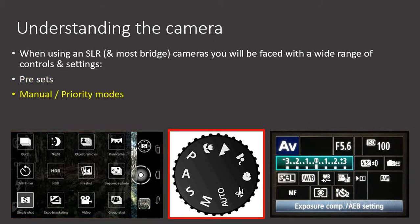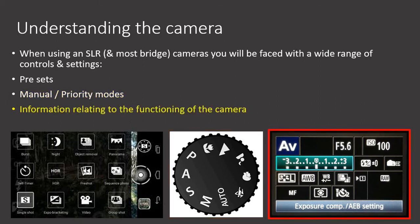For more advanced cameras there will be a button on top which will give you access to aperture, shutter, manual, priority and various other settings. And there's many pieces of information available based upon whatever setting you have to be using at the time, so there's a lot to look at.